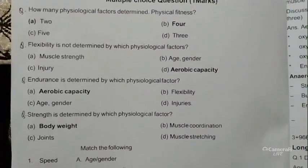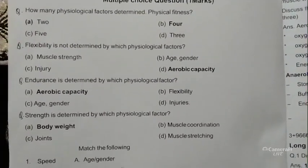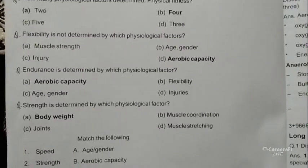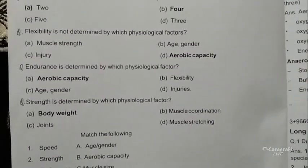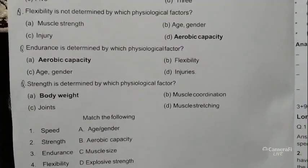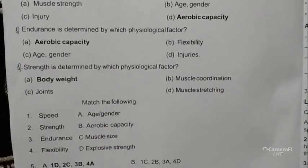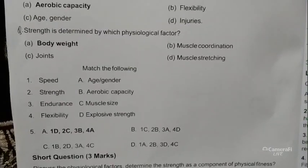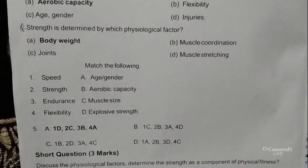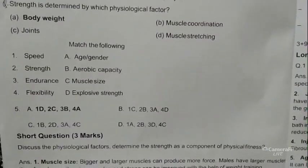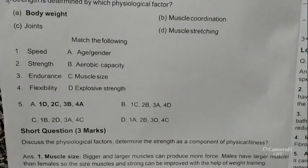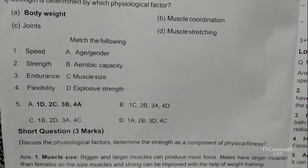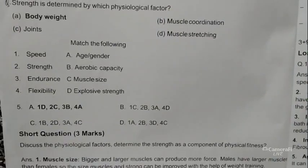Some multiple choice questions: How many physiological factors determine physical fitness? Answer: four. Flexibility is not determined by which physiological factor? Answer: aerobic capacity. Endurance is determined by which physiological factor? Answer: aerobic capacity. Strength is determined by which physiological factor? Answer: body weight. For matching: speed matches with explosive power, strength matches with muscle size, endurance matches with aerobic capacity, flexibility matches with age and gender.